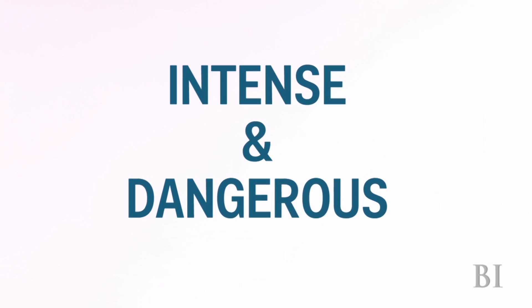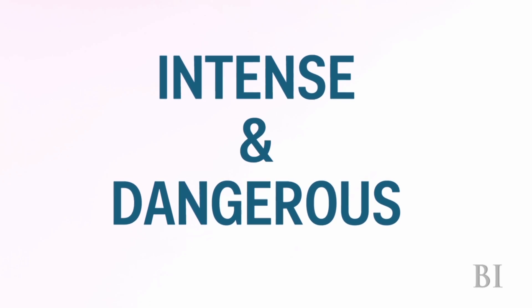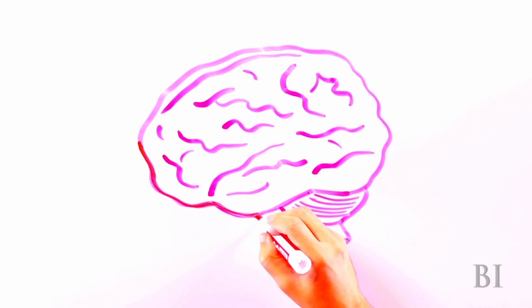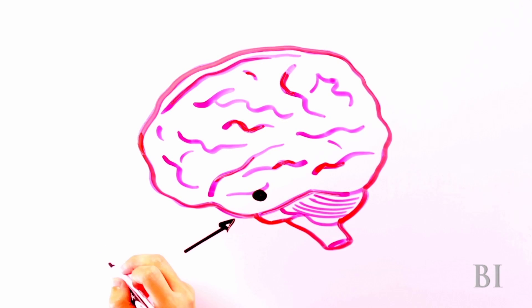Stress can have an intense and sometimes dangerous effect on your body. It all starts in a part of your brain called the amygdala. When your boss yells at you or you start freaking out about a deadline, it sends a warning message to your hypothalamus, which starts mobilizing the nervous system.